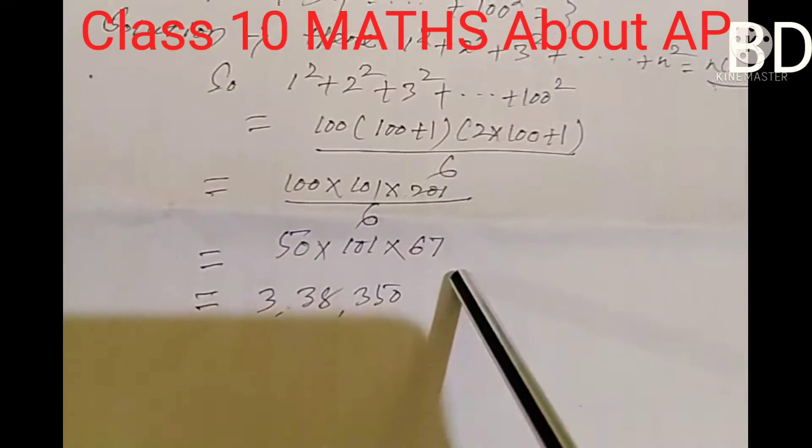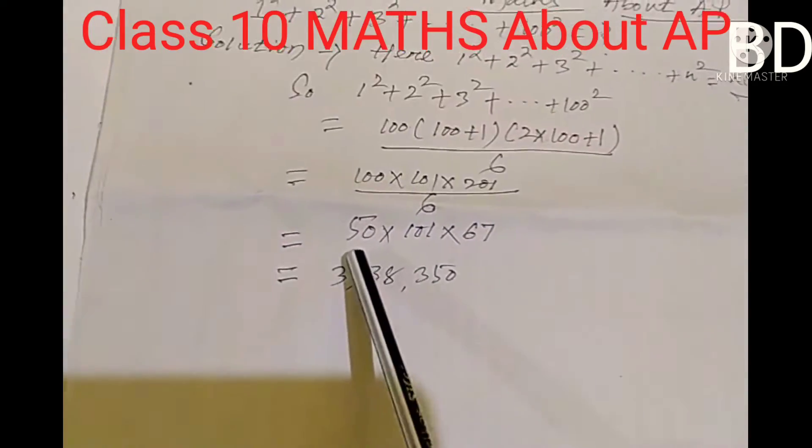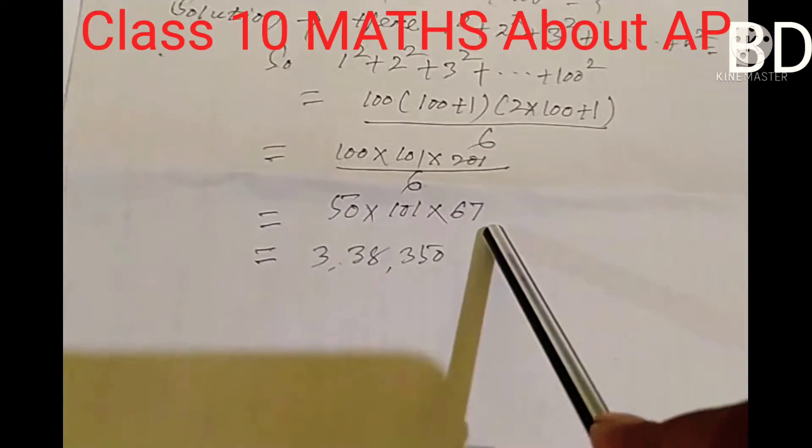Then we simplify to get 50 multiplied by 101 multiplied by 67.